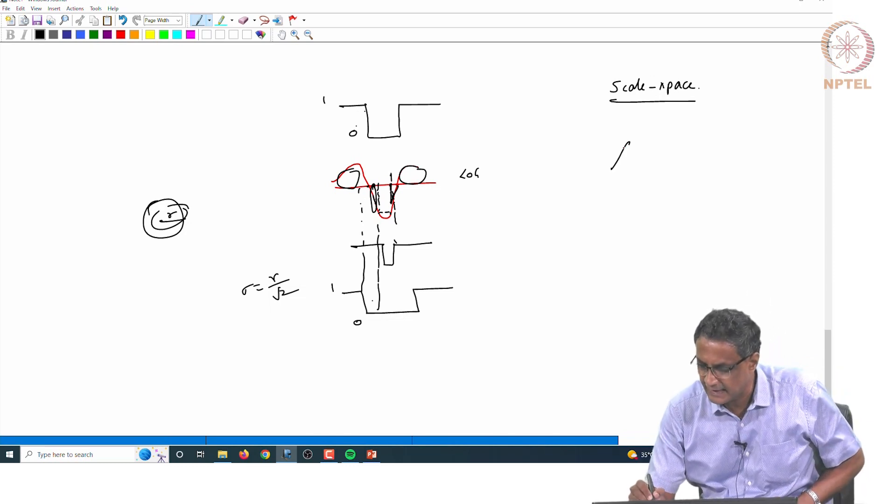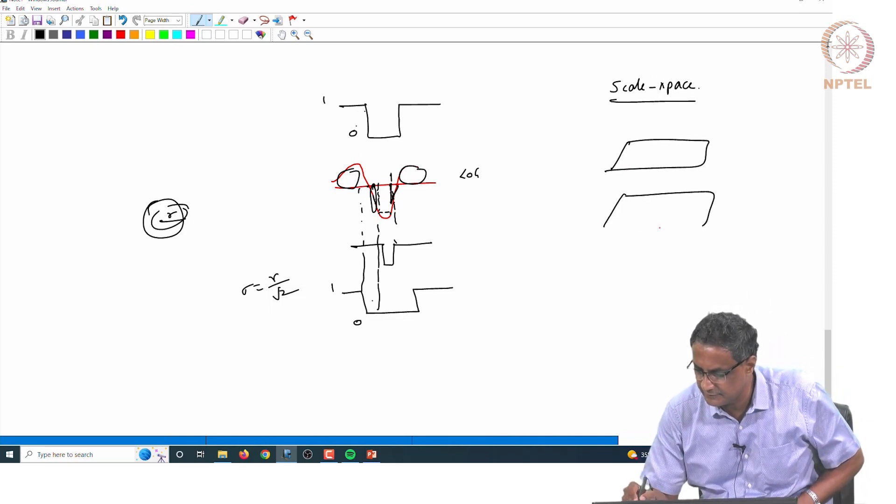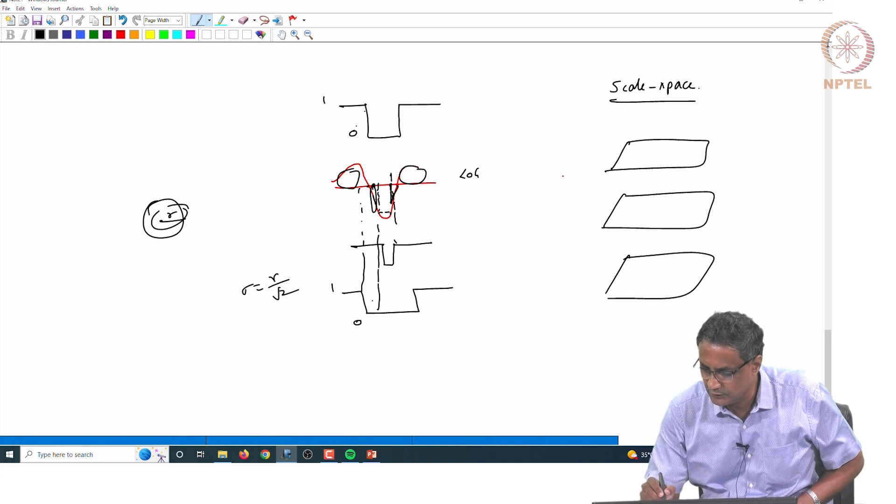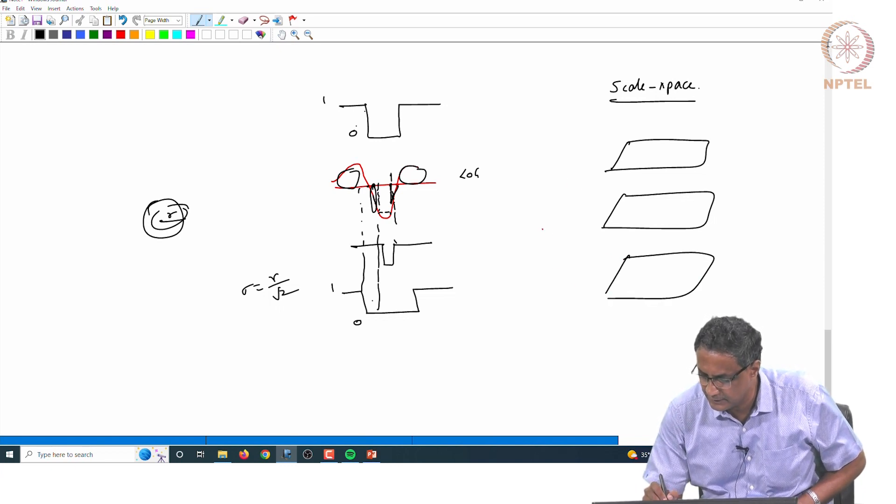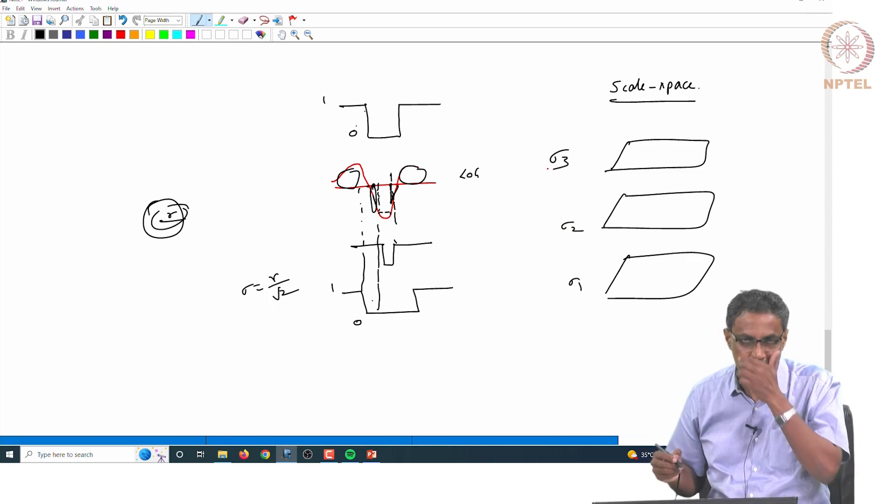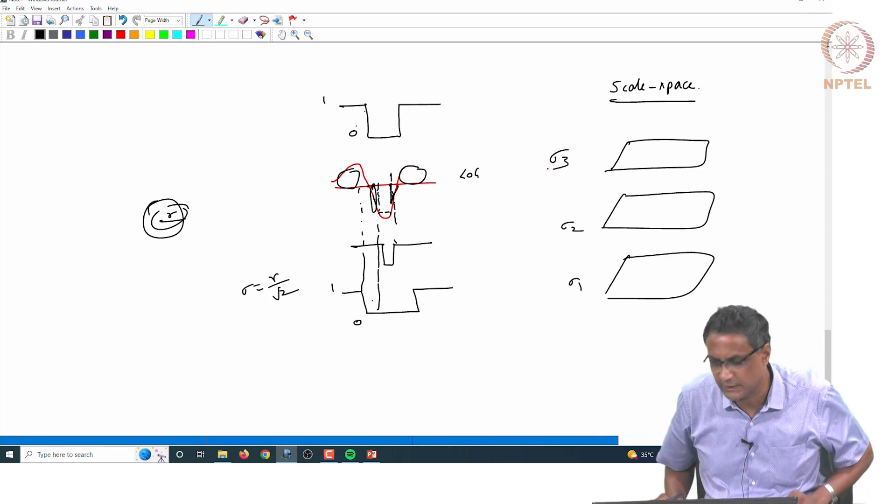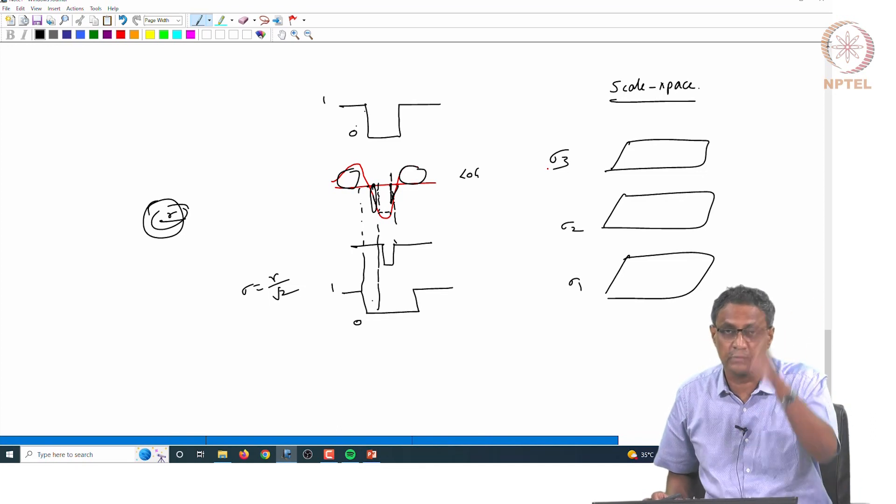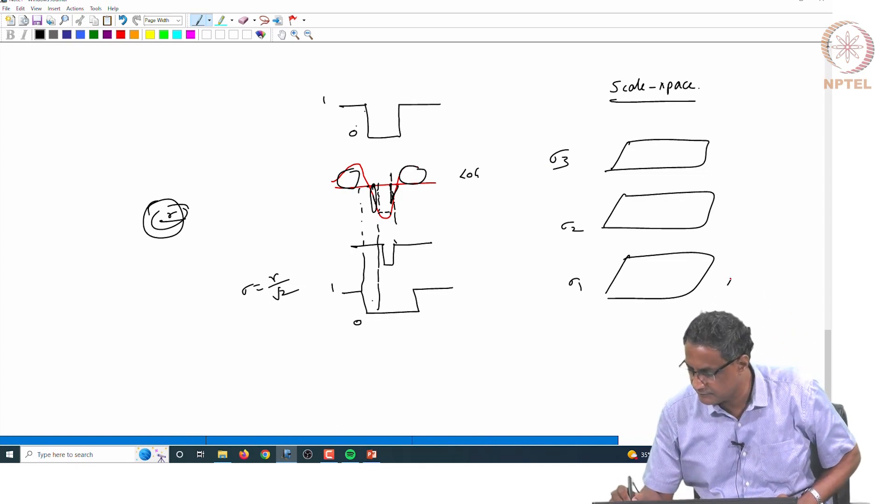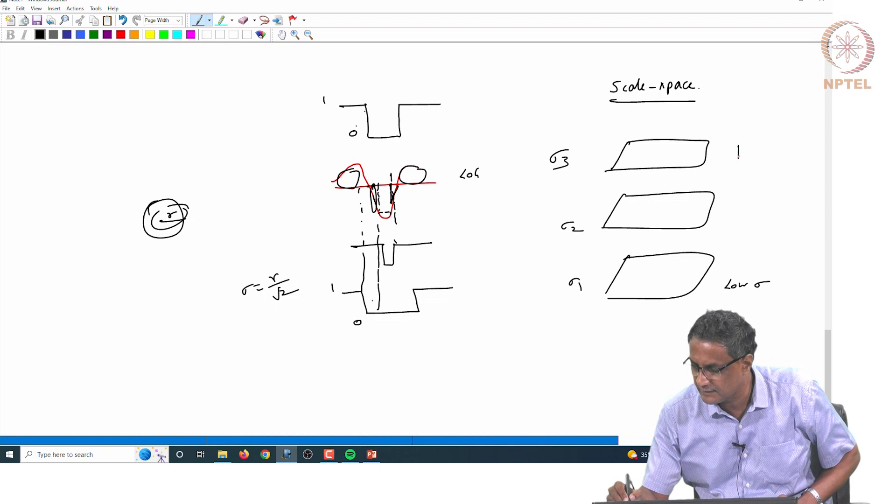That is why you get what is called a scale space. Scale space is like having different scales, which basically means that you have a sigma 1, you have a sigma 2, you have a sigma 3 - you keep on varying your sigma. You can go from a low sigma to a high sigma.